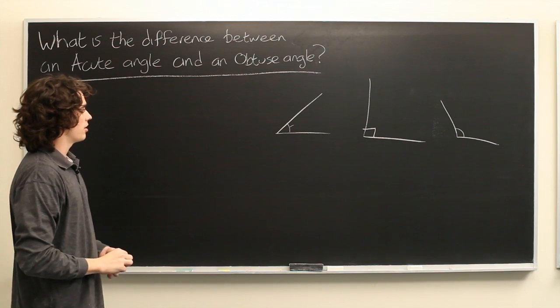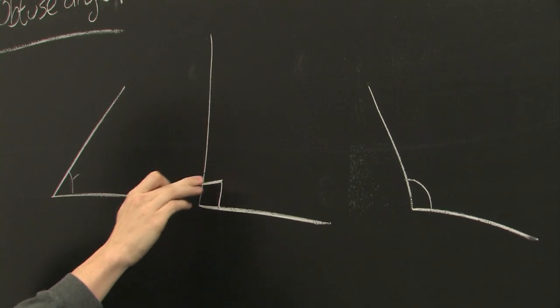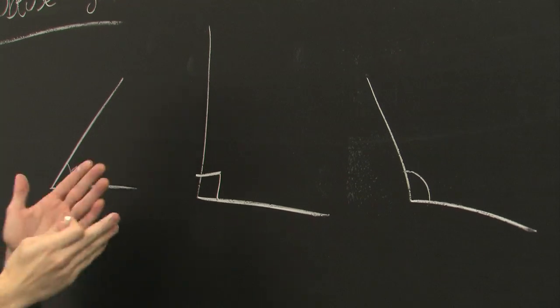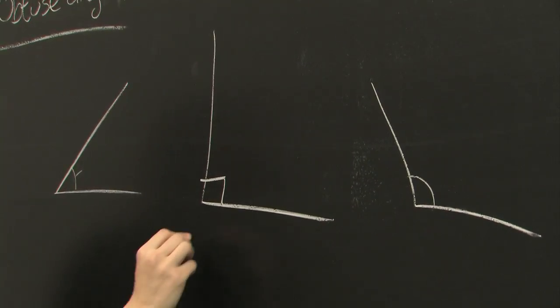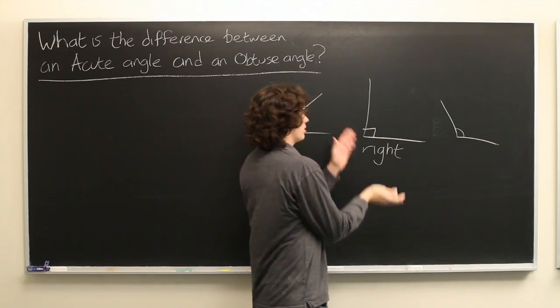So, how can we characterize these angles? Well, typically when we have this sort of square symbol in the corner of an angle, this is referred to as a right angle, meaning that it is 90 degrees.